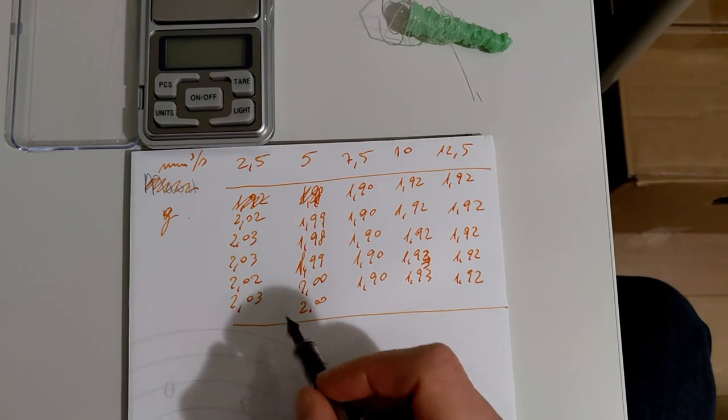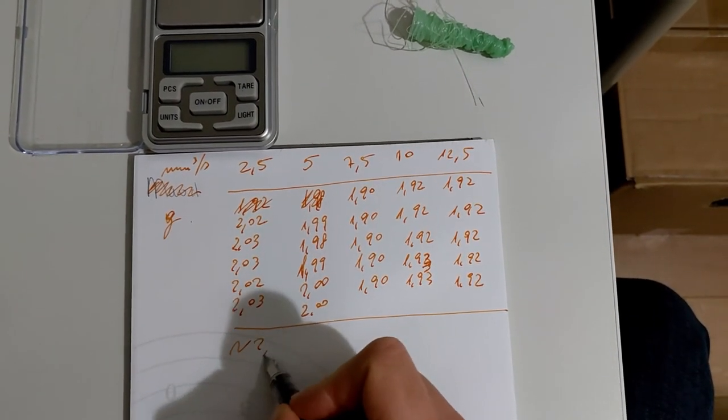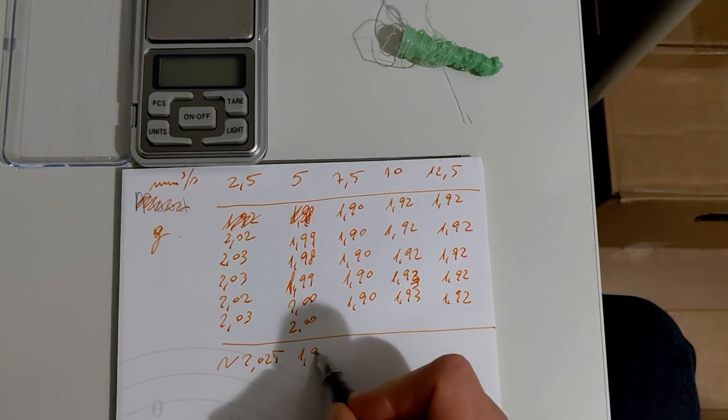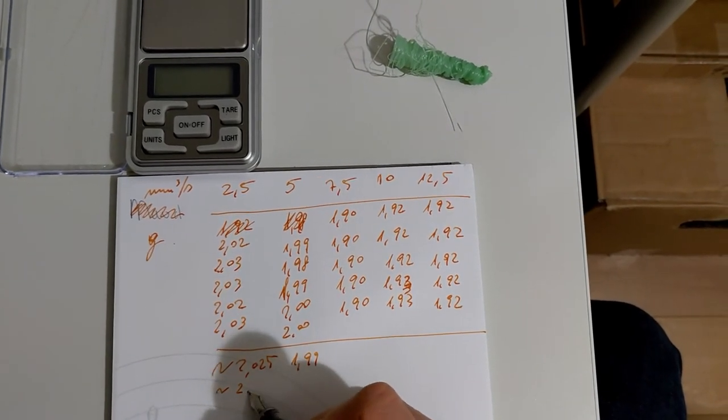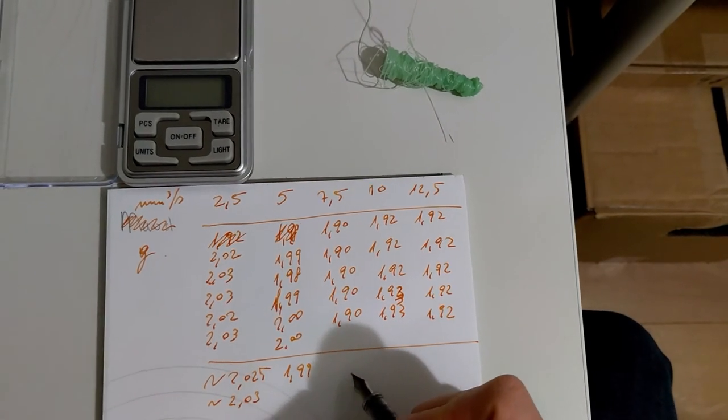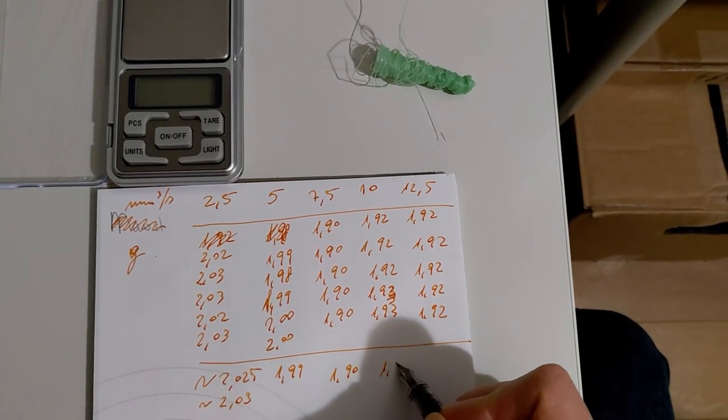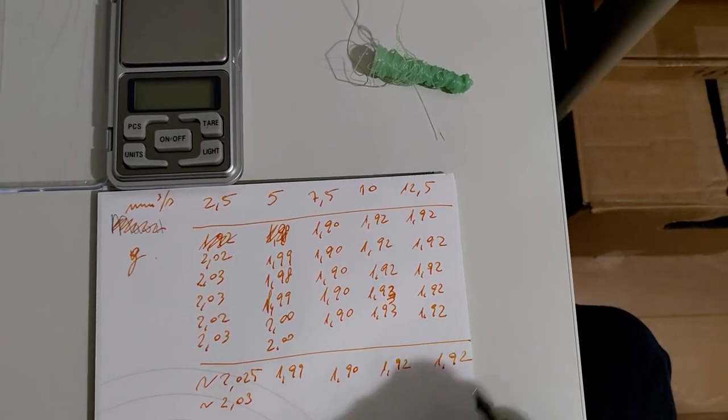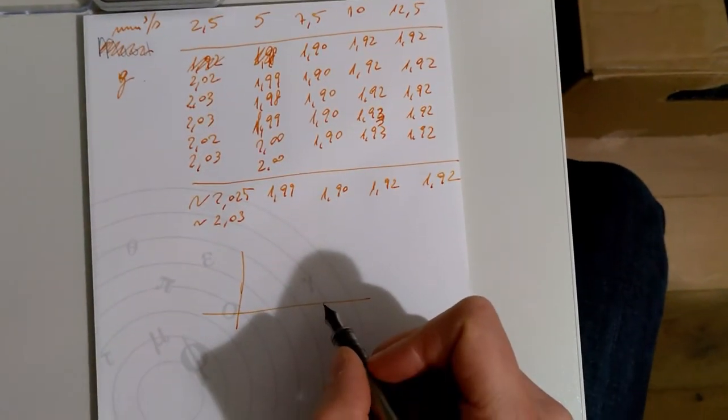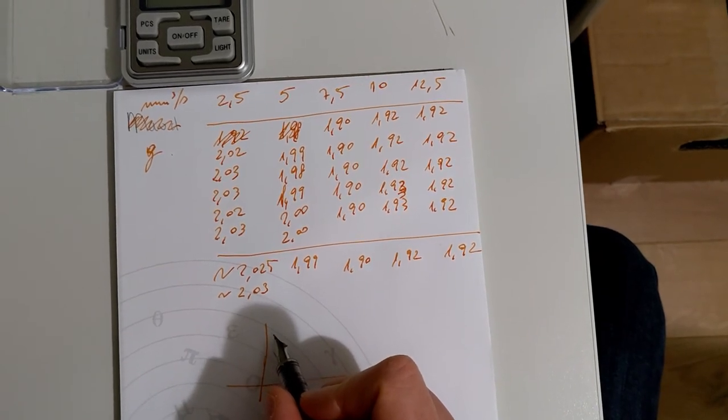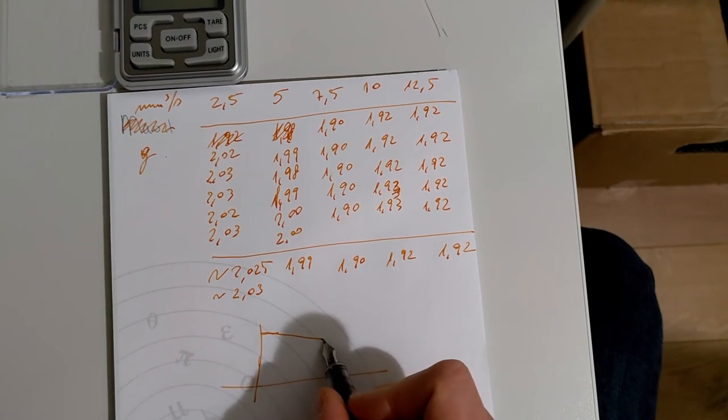The measurements show about 2.8, then 1.92 and 1.92 again. There is first a decline and then it's constant.